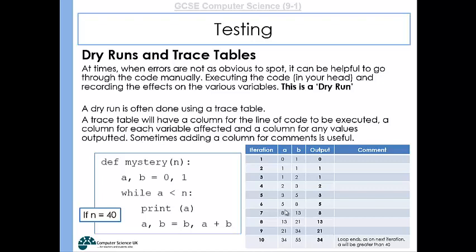So with the first iteration, a starts off at zero, b starts off at one. So I've written zero and one under a and b in that first row. So whilst a is less than n, well n is 40, a is zero. So whilst that is true, we enter the loop, and we print out a, which is why a is being outputted here. A then takes on b's value, and b takes on a plus b's value. So if we think about that, then a will become one, and b will become zero plus one, so it will stay as one.